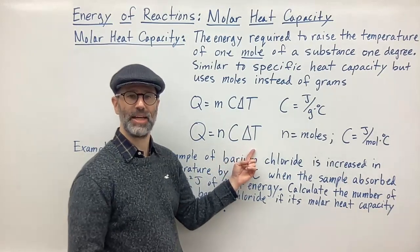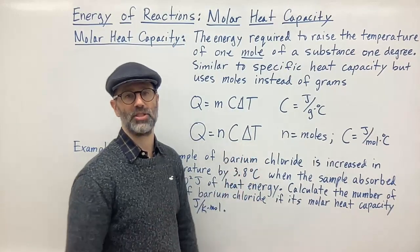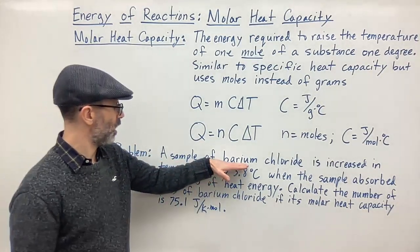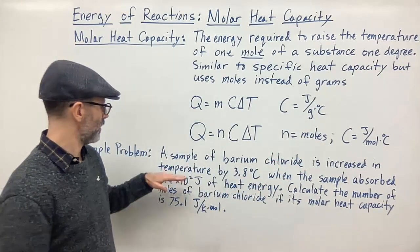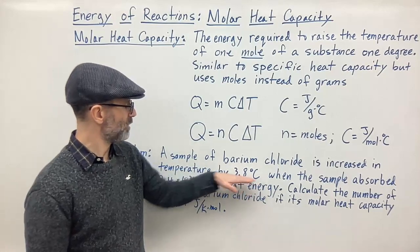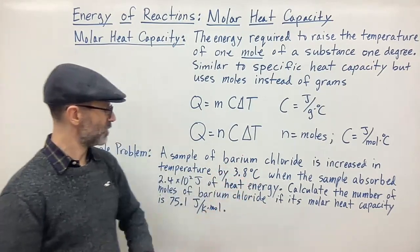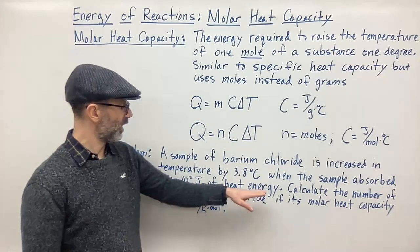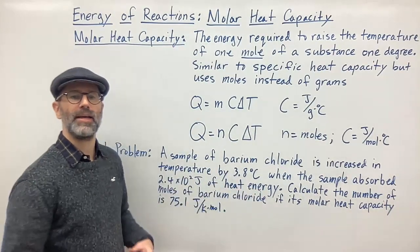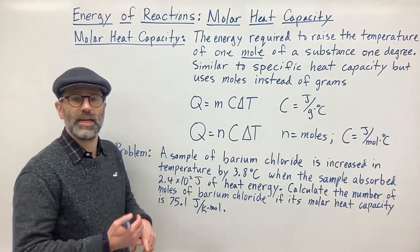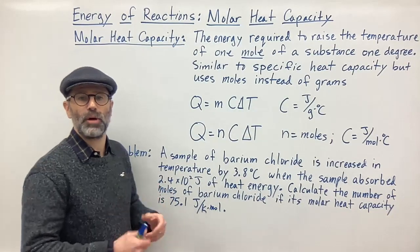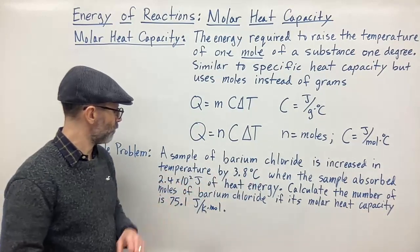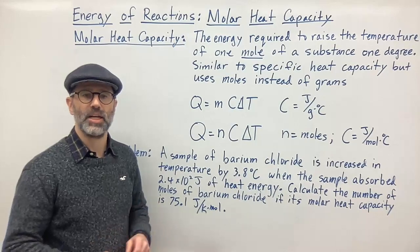The change in temperature can be in either Celsius or Kelvin because the change will be the same. Here's a sample example: a sample of barium chloride is increased in temperature by 3.8 degrees Celsius — that's our change in temperature — when the sample absorbs 2.4 times 10 to the second joules of heat energy.